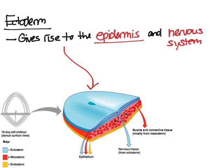First, we're going to talk about the ectoderm, which is the outer layer of the tissue. The ectoderm gives rise to the epidermis and the nervous system. The epidermis is essentially the outer layer of the skin, while the nervous system allows for communication between cells.